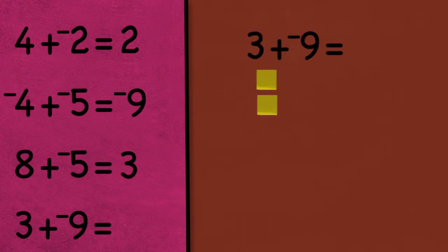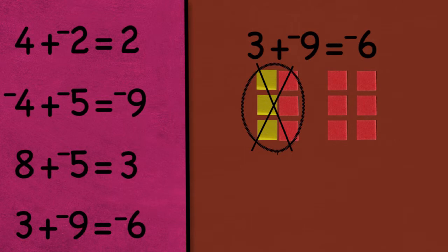And the last problem, 3 plus negative 9 is negative 6. In this situation, the signs are different, and I had more negatives than positives, so my answer was negative.